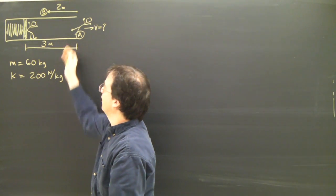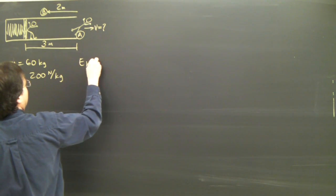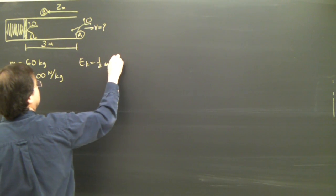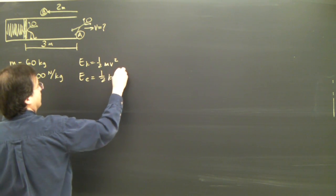So we're dealing with kinetic energy and we're dealing with spring energy. The formulas we have are the kinetic energy is one half mv squared and the elastic energy of the spring is one half kx squared.